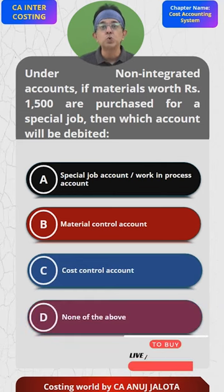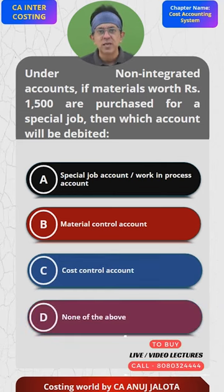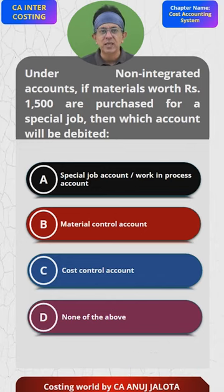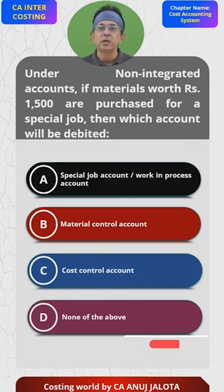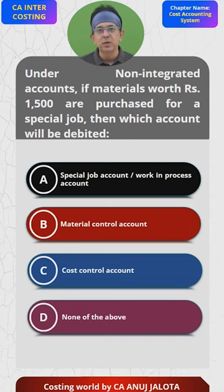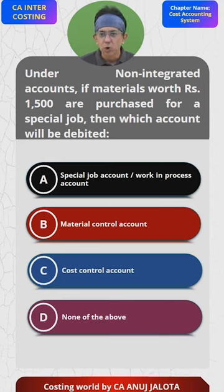When you usually purchase raw materials, the entry is SLC account debit to GLA. Then raw materials are issued to the WIP account — that time the entry is WIP account debit to SLC.